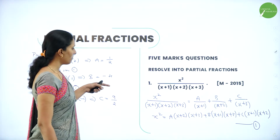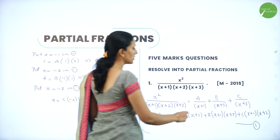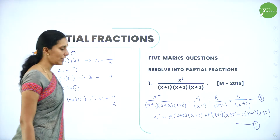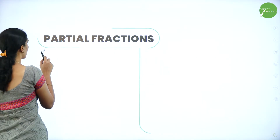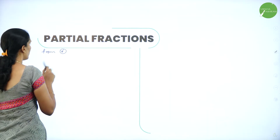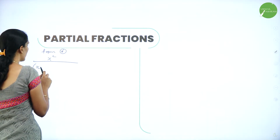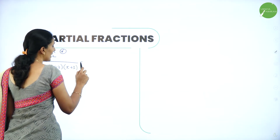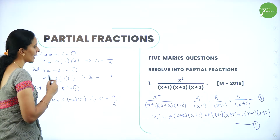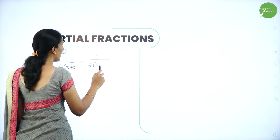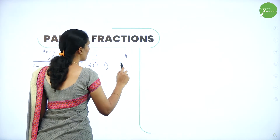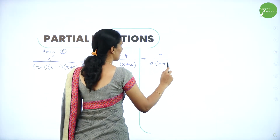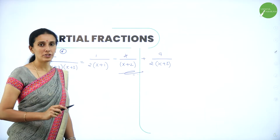Now substitute the values of A, B, and C in equation 1. So x² divided by (x+1)(x+2)(x+3) equals (1/2)/(x+1) + (−4)/(x+2) + (9/2)/(x+3). Thus we have resolved the partial fraction.